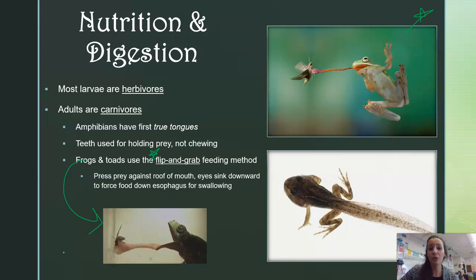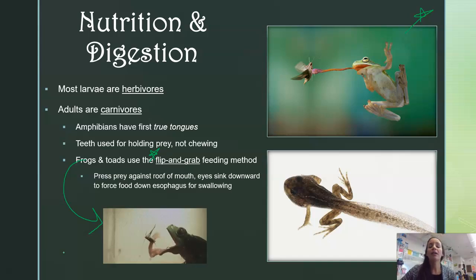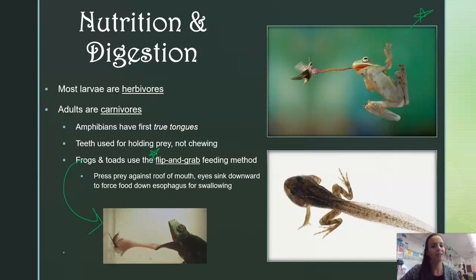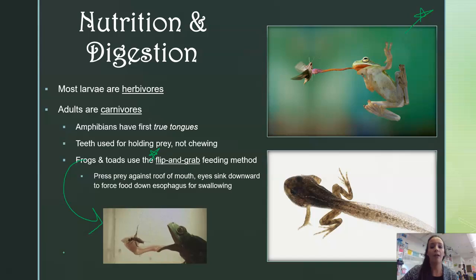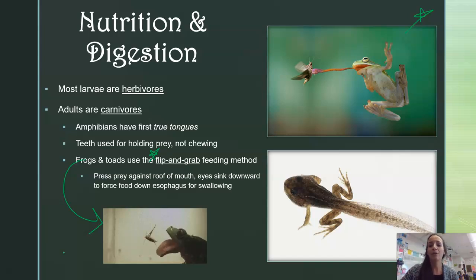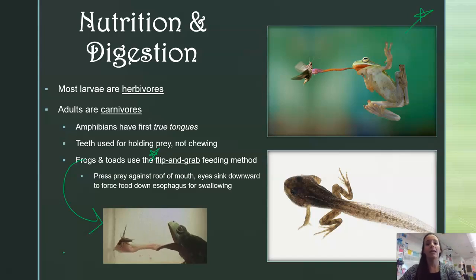They do have teeth — some of them, not all — but these are just for holding prey, not necessarily for chewing. You can see a video of a frog doing the flip-and-grab method, and up at the top you see a frog sticking its tongue out to catch prey.